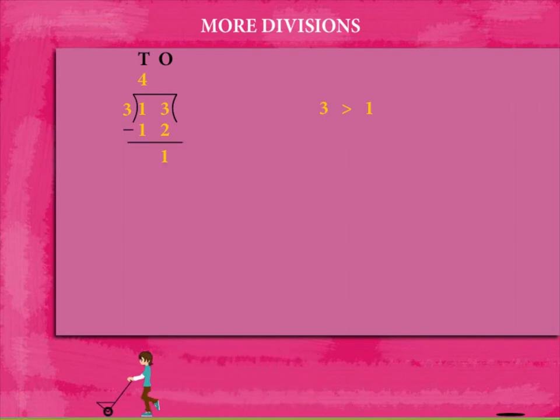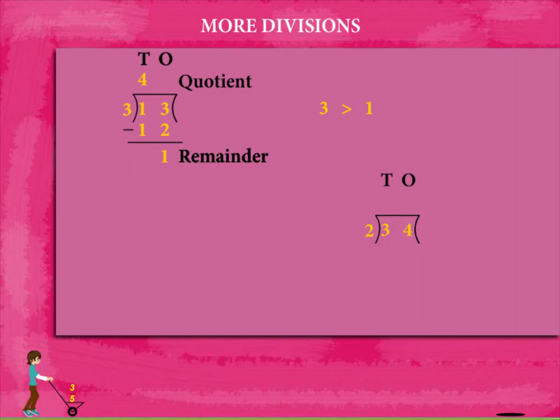You get 1 as remainder and the quotient is 4. Here is another example to divide 34 by 2. Here the divisor 2 is less than the 3 tens of the dividend.